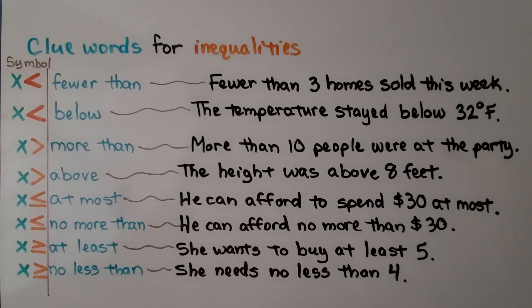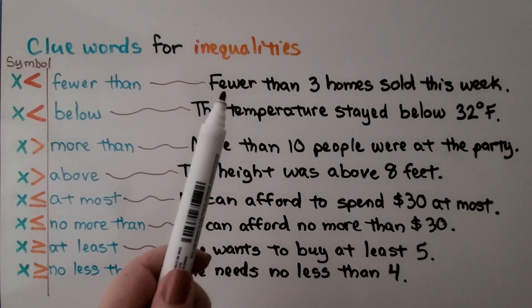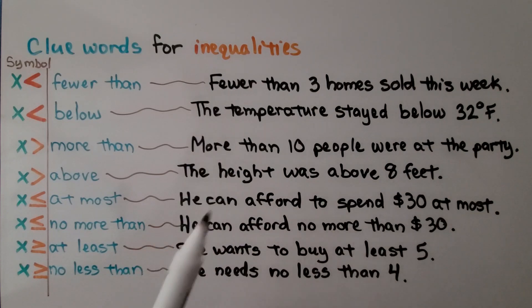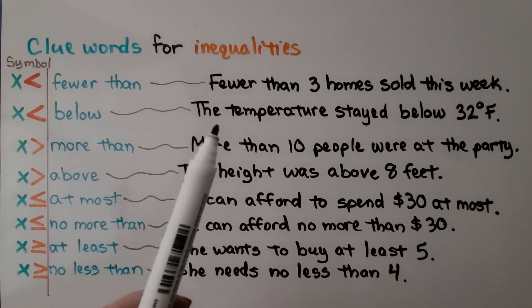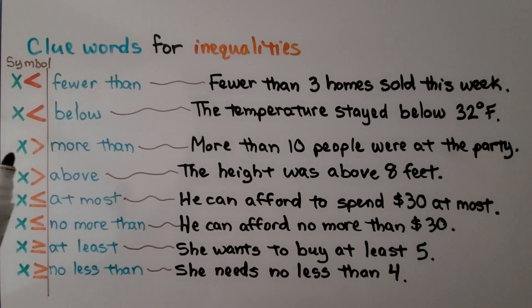Here's some symbols and clue words for inequalities. We're going to have our variable is less than if we see fewer than. Fewer than three homes sold this week. Our variable and then less than if it says below. The temperature stayed below 32 degrees. Our variable and a greater than for more than. More than 10 people were at the party. Our variable and greater than if we see above. The height was above eight feet. That means it was greater than eight feet.